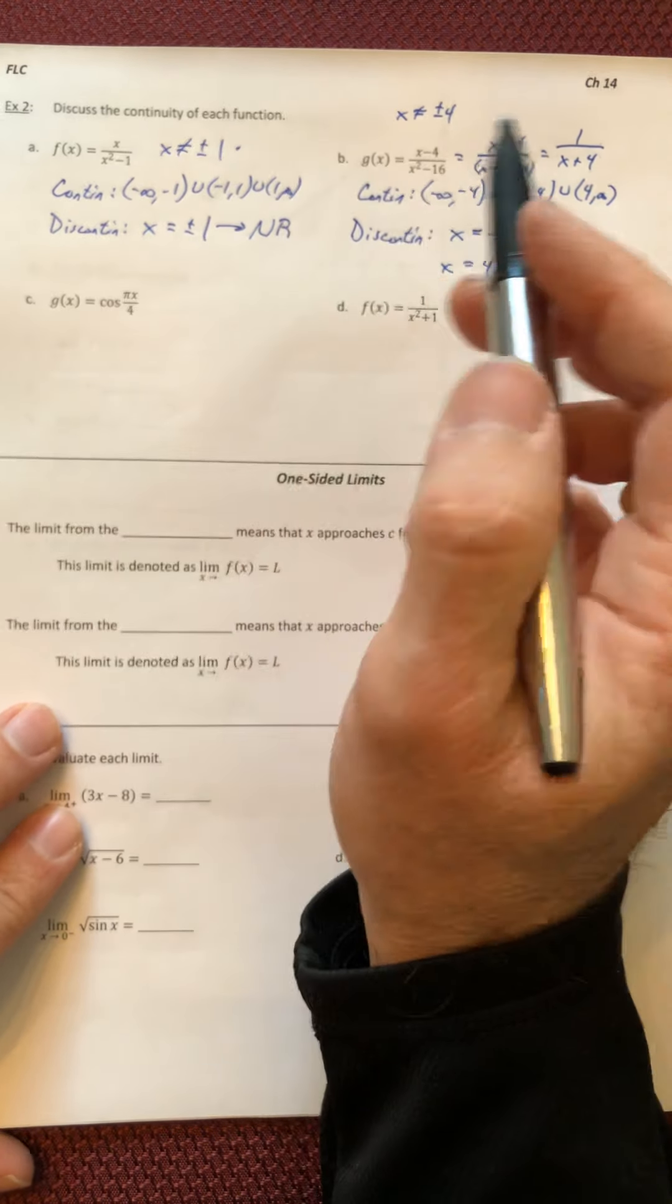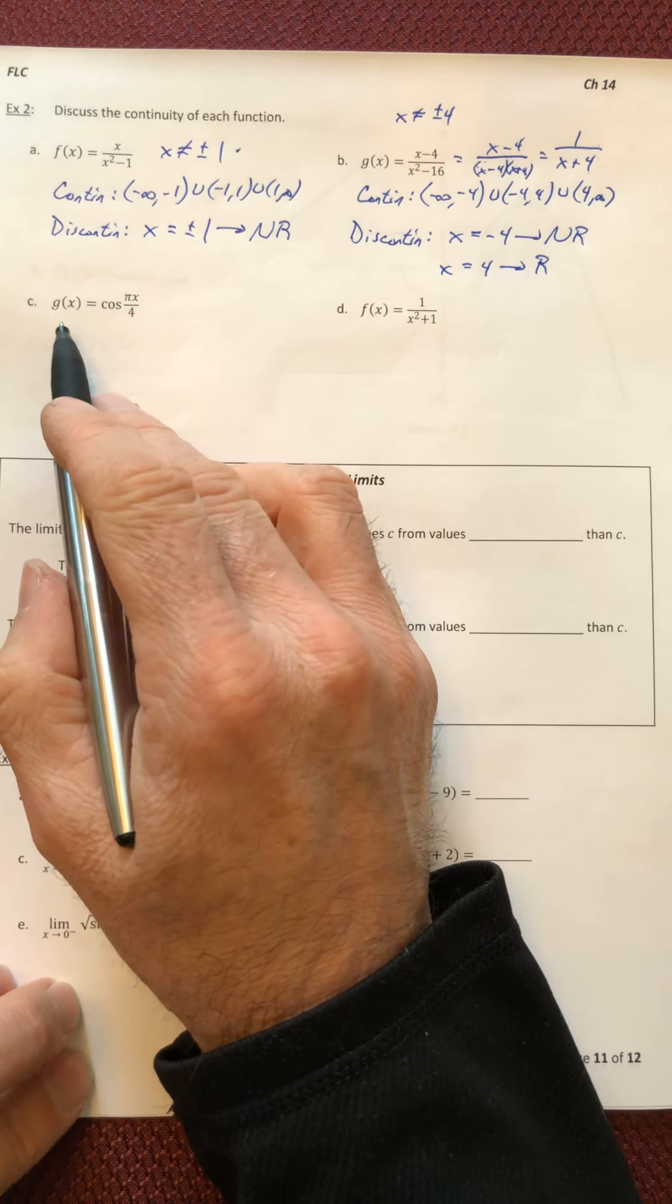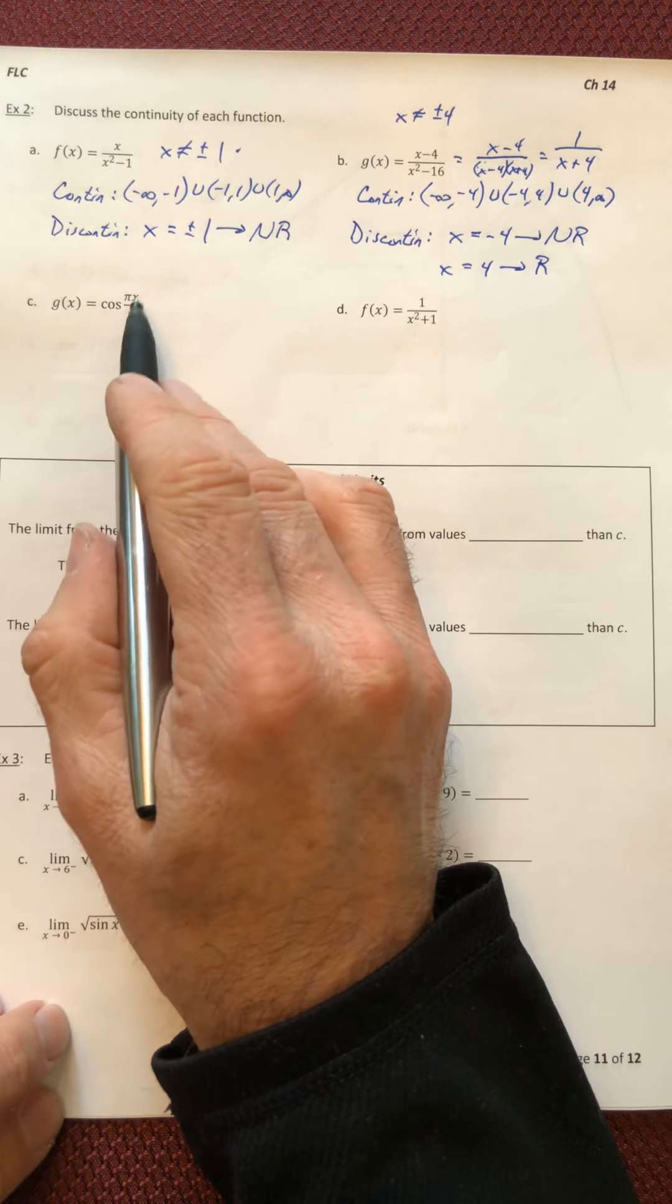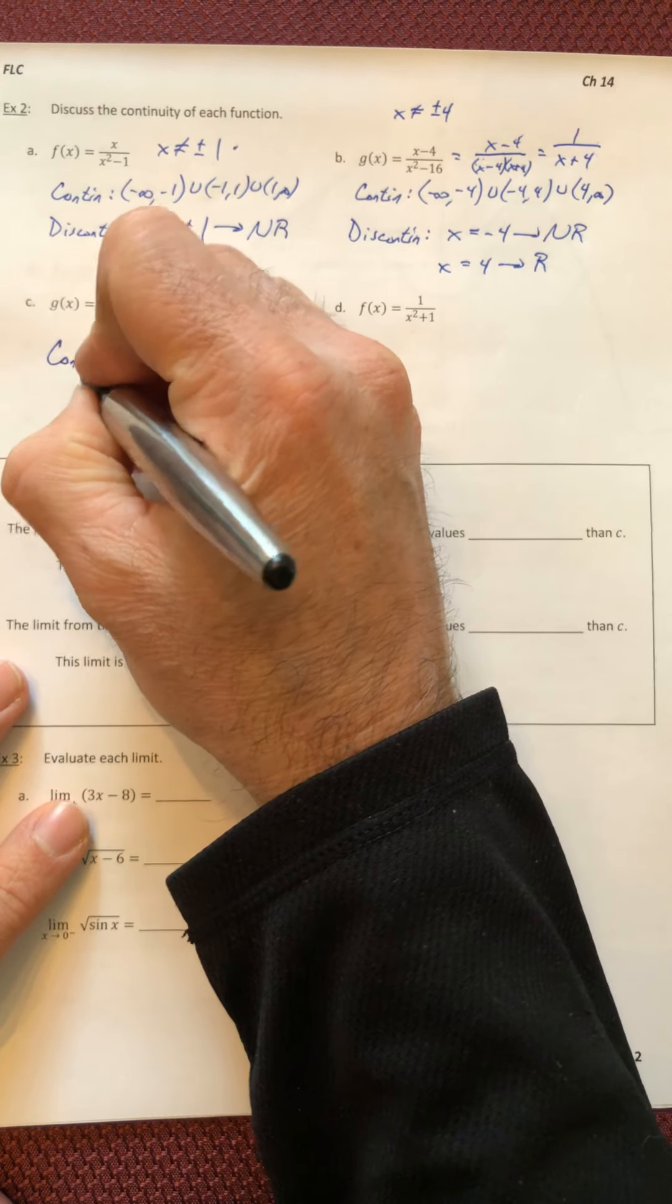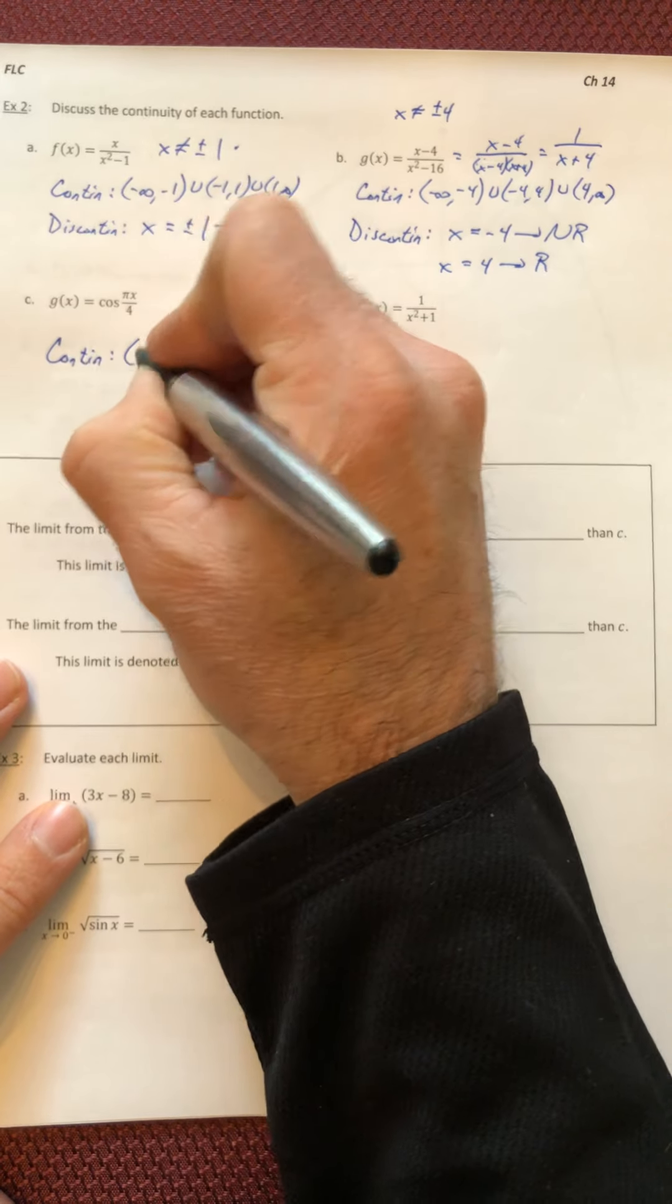Alright, now part C. This one, you can plug anything you want in a cosine. That's fine. So it's continuous everywhere.